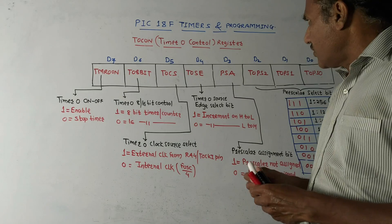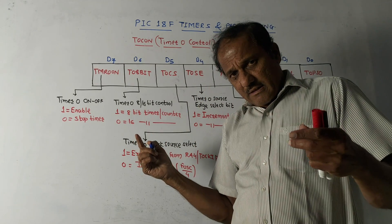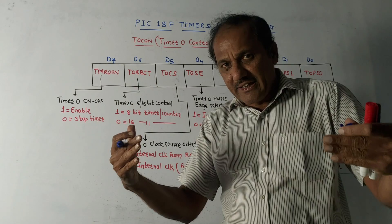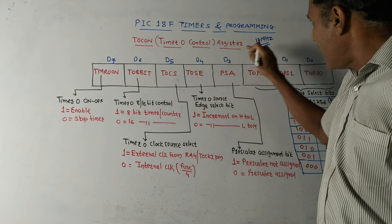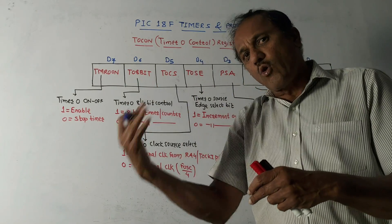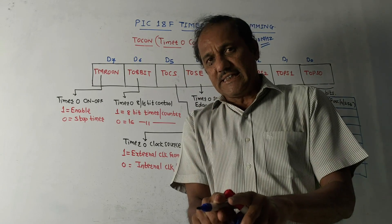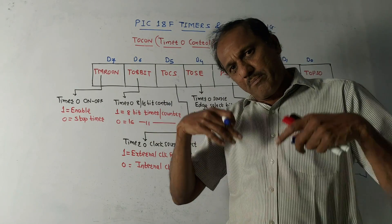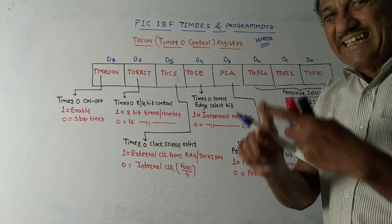In a PIC microcontroller, the frequency is usually in megahertz - let's say 10 MHz. If you allow all the timers to operate with this frequency, overflow will occur very early. The solution is to divide this clock frequency. For example, dividing by 4 gives 2.5 MHz to operate the timer or counter, just to avoid early overflow. This concept of dividing the available frequency before applying it to the timer is called pre-scaling.